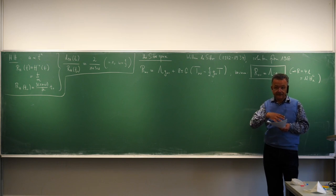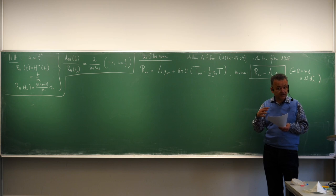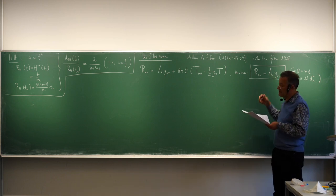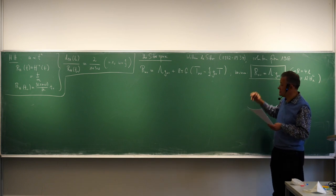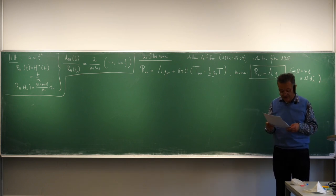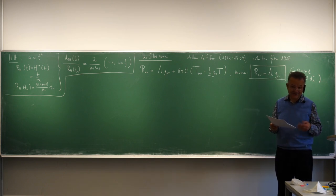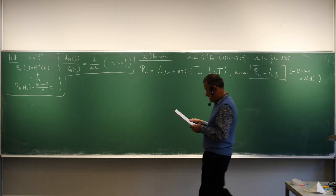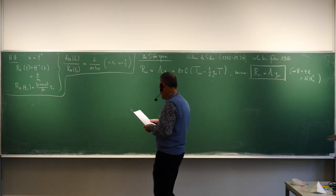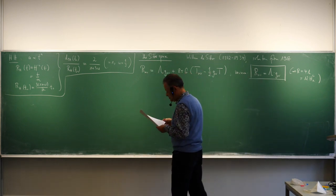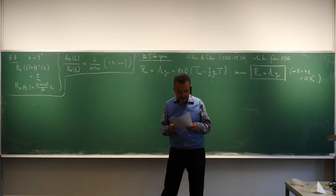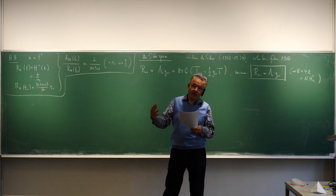You can write the Einstein equations as R_mu_nu equals lambda g_mu_nu plus 8 pi G times (T_mu_nu minus one-half g_mu_nu T), where T is the trace. In vacuum R_mu_nu equals lambda g_mu_nu, from which the Ricci scalar is four lambda. This can be written as 12 H_lambda squared, where H_lambda will be the Hubble parameter of de Sitter space. Lambda equals zero gives Minkowski space; lambda negative gives anti-de Sitter space, popular in theoretical physics; here we restrict to de Sitter space as it is most important for the future of our universe and for inflation.